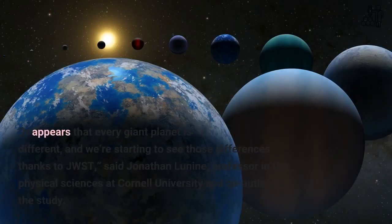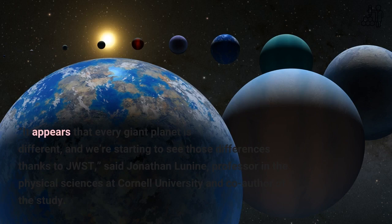It appears that every giant planet is different, and we're starting to see those differences thanks to JWST, said Jonathan Lunine, professor in the physical sciences at Cornell University and co-author of the study.